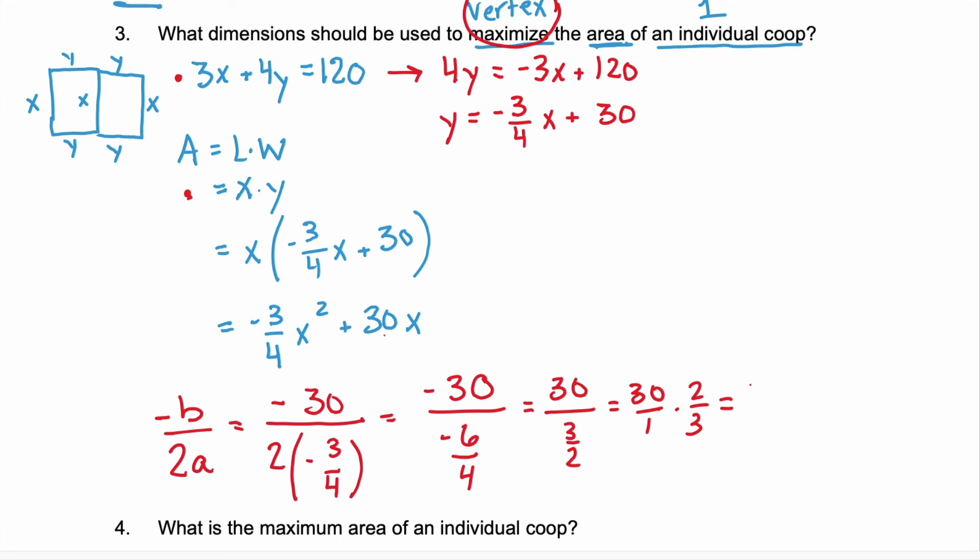This is the same as 30 over 1 times 2 over 3, which would be 60 over 3 or 20 feet. Remember, this is our x, right? We solved negative b over 2a, which is the x-coordinate of our vertex. So we have 20 feet for our x.